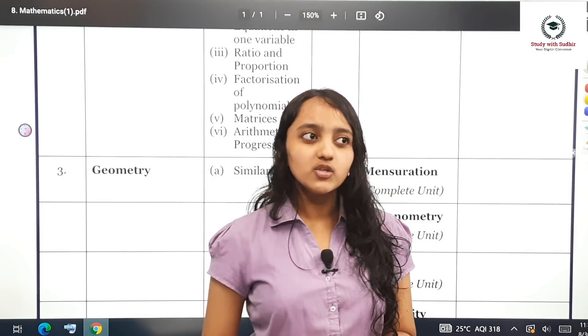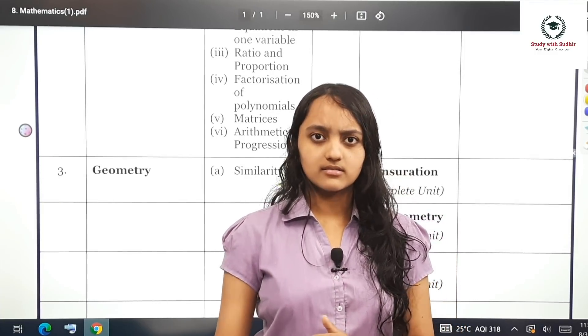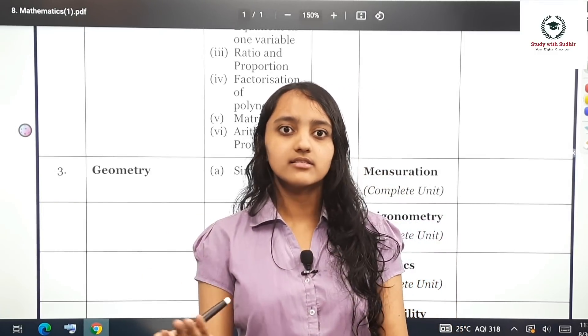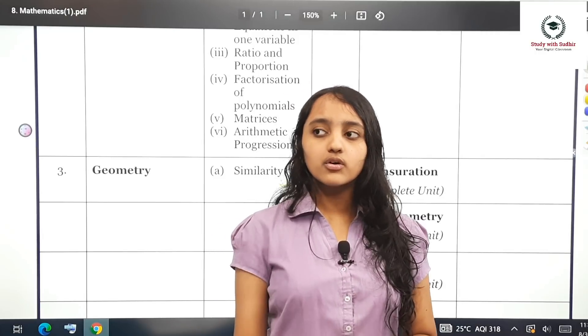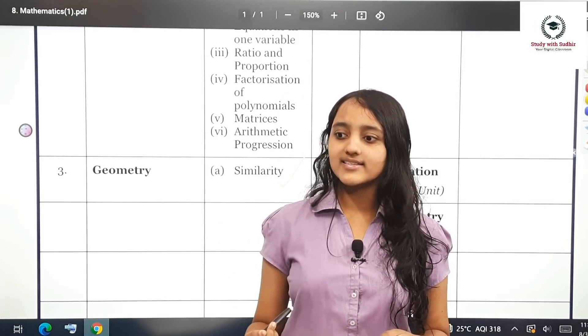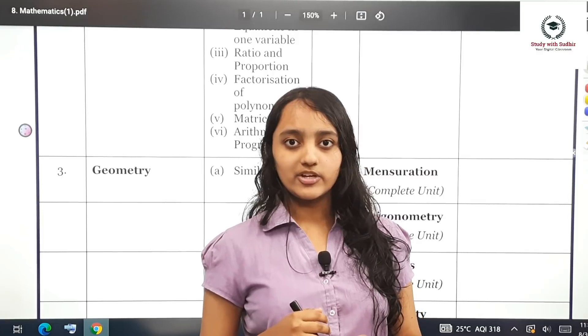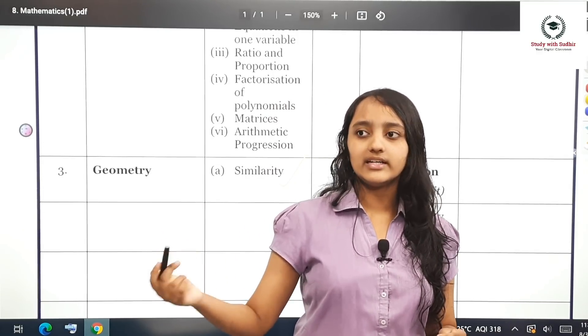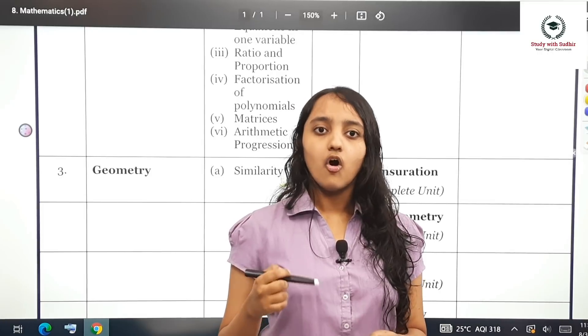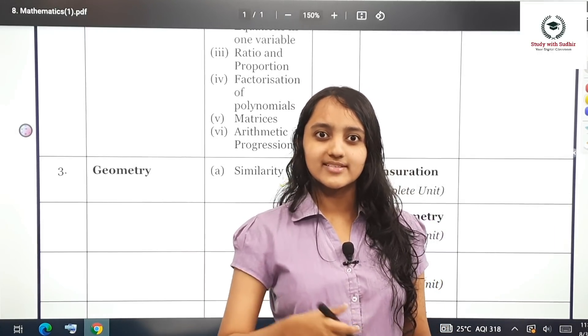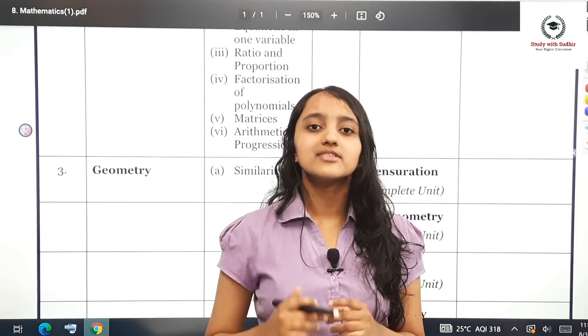Another advantage in MCQ based is that you can use elimination tricks to get your final answer. For example, in a linear inequality question, if it says X should belong to an integer and in the options X belongs to a real number, it can directly be eliminated. Or in a factorization question, you can substitute the options in the question to get the answer.